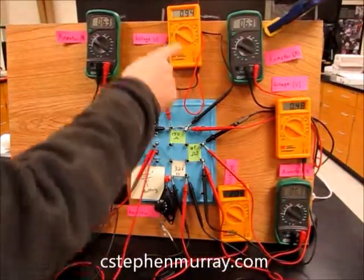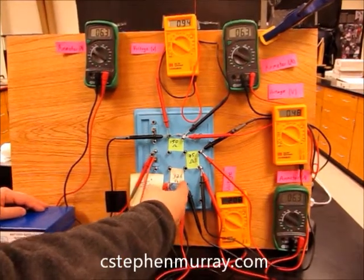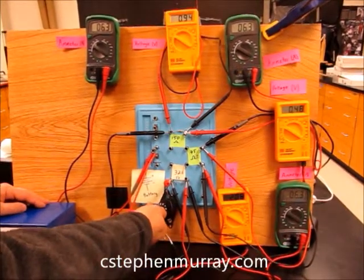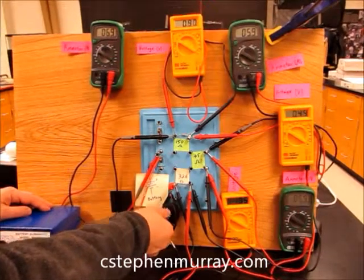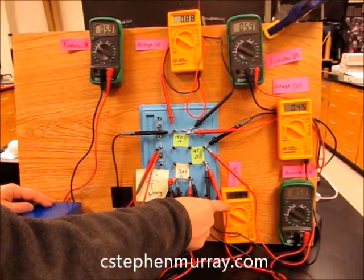Now notice down here, this one's a little more than double of this one, but it's a little bit more than double the resistance. Watch as I change the resistance instead to control the current. Again, half of this one, a little bit less than half of this one.